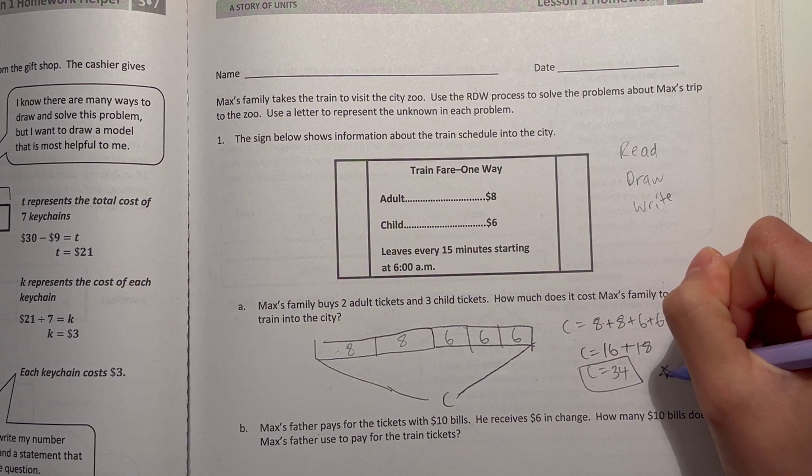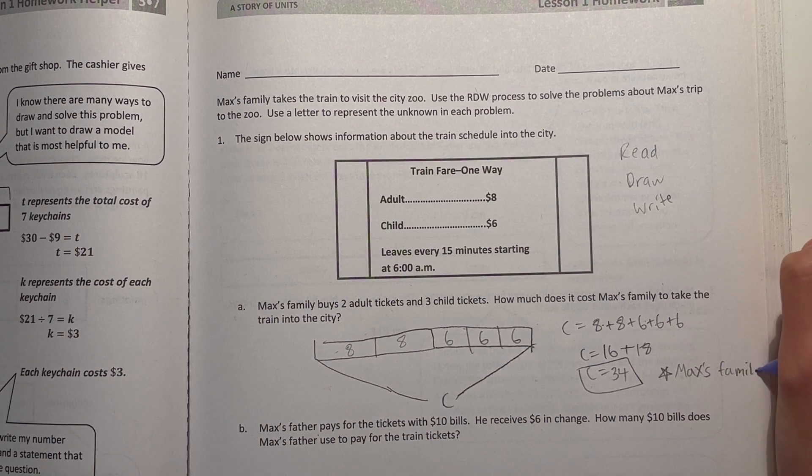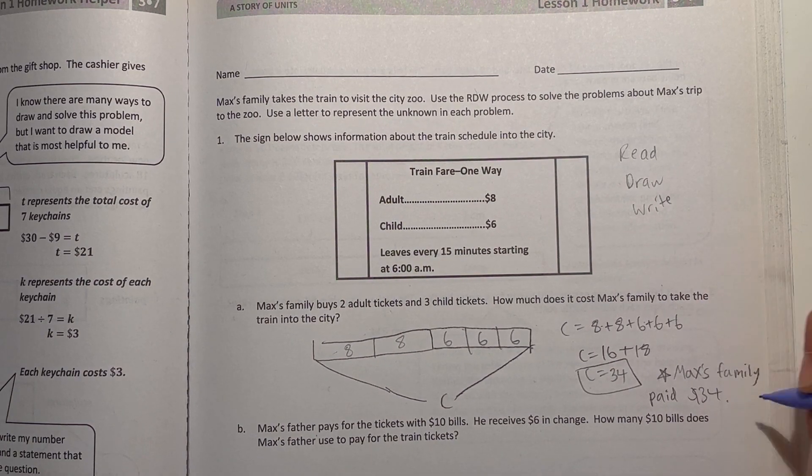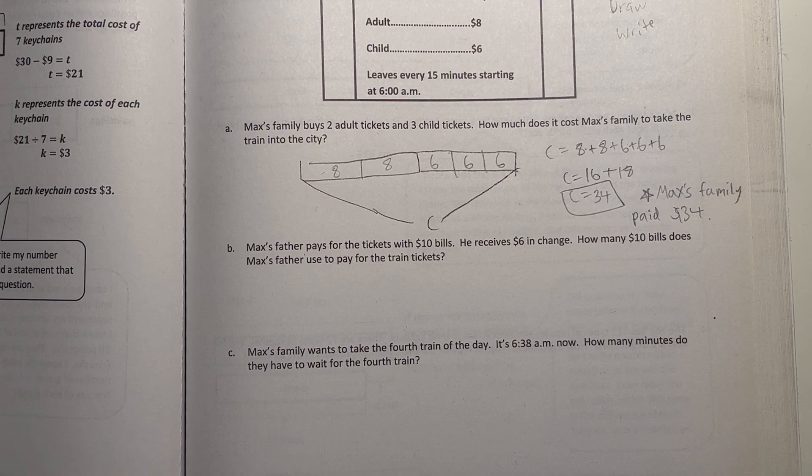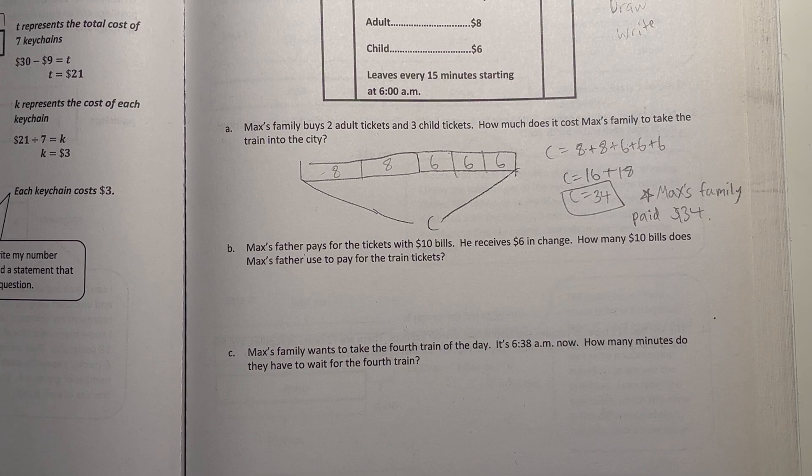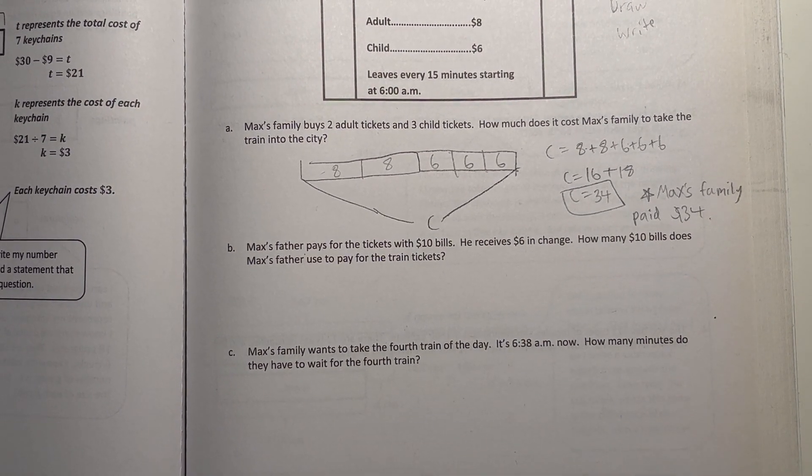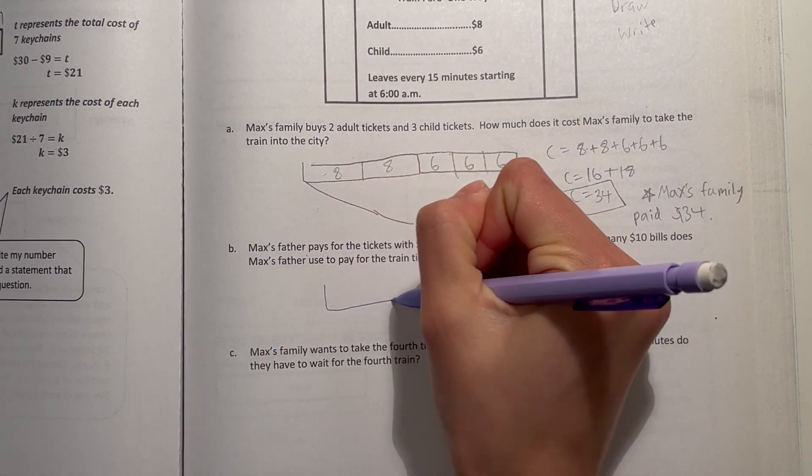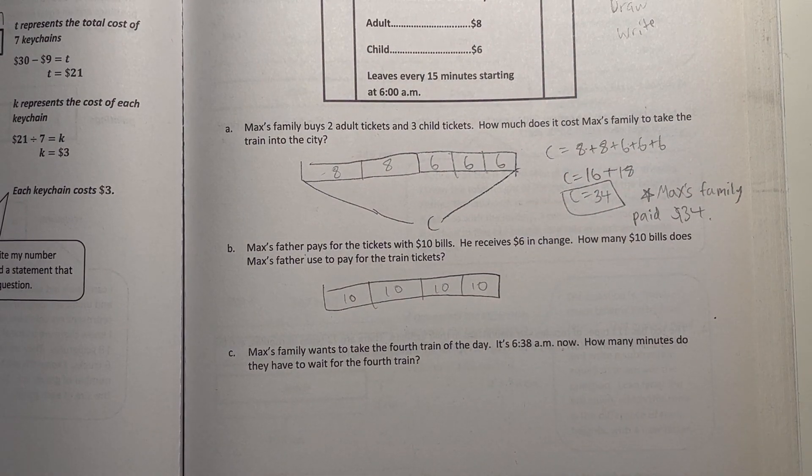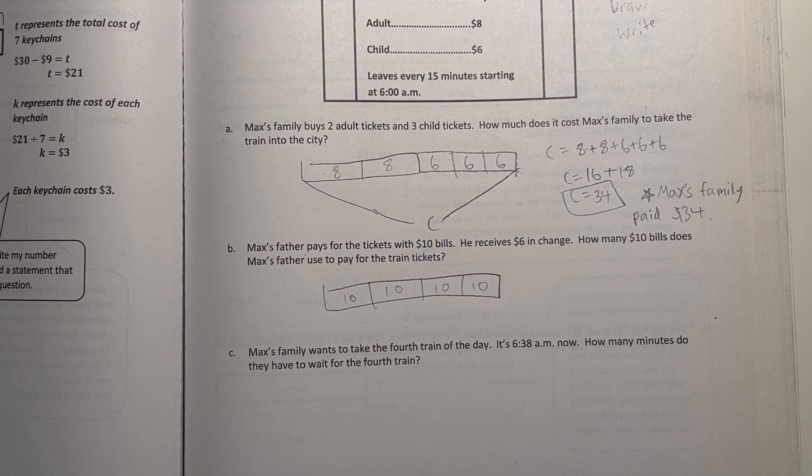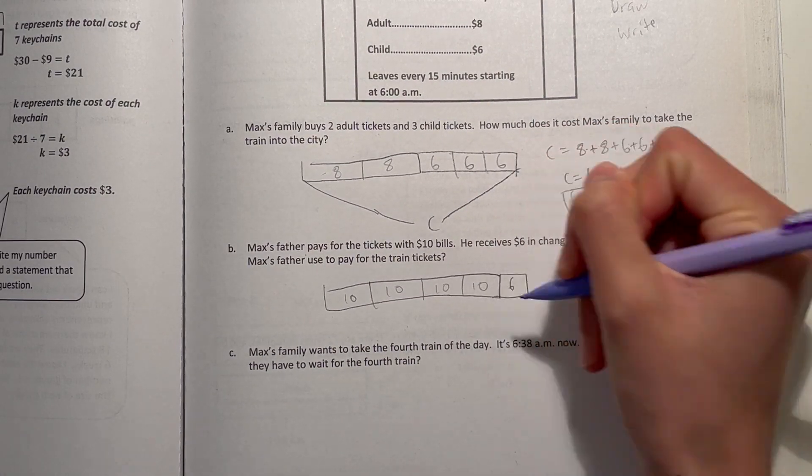That means Max's family paid $34. Alright, B. Max's father pays for tickets with $10 bills. He receives $6 and change. How many $10 bills does Max's father use to pay for the train tickets? Alright, so we know the cost was $34. So he has at least 4 $10 bills. And that is because if he had 3 $10 bills, that wouldn't even be enough for $34. So he wouldn't even get any change. But he has 4 $10 bills. And we'll add on that $6 he received and change.